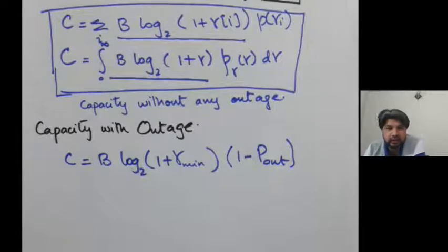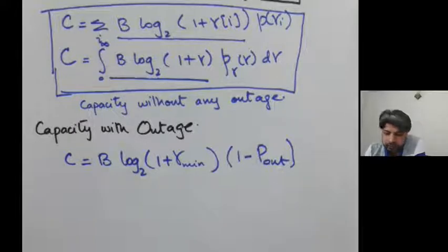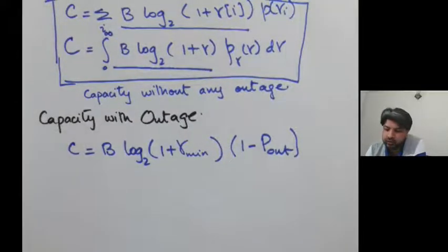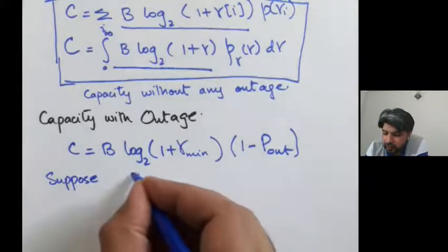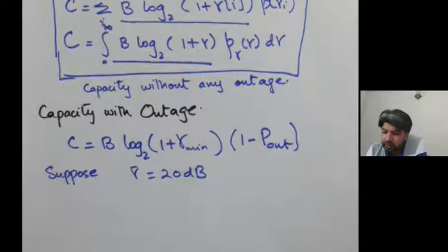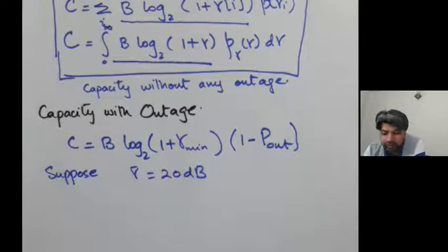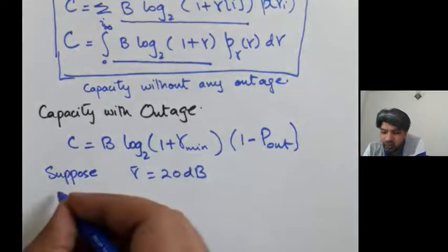You might think capacity with outage is always less than capacity without outage, but that may or may not be the case. For example, assume you have a very healthy channel with γ̄ = 20 dB, and you allow a very small outage. Let's find out what happens when the channel undergoes Rayleigh fading.